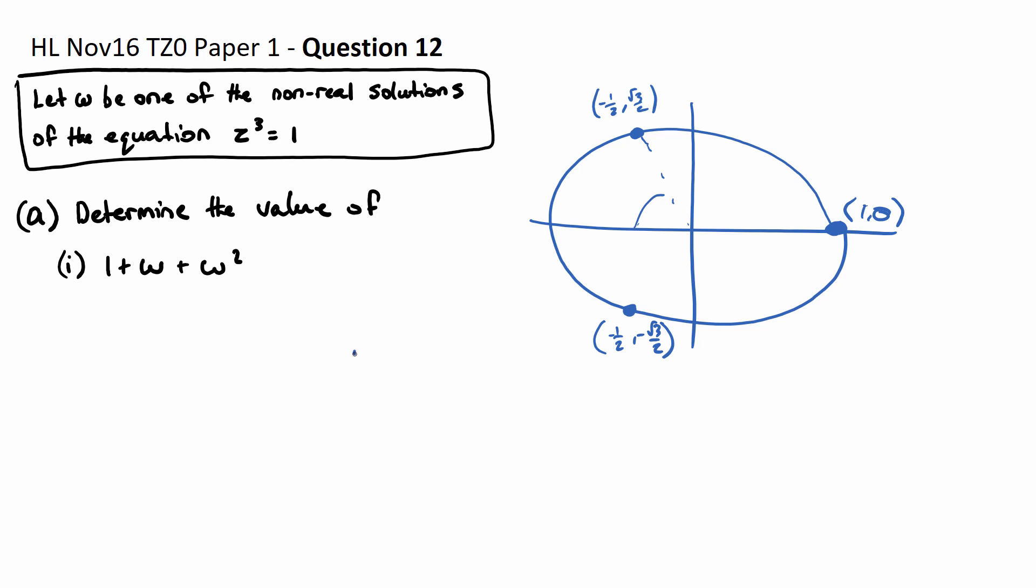Well w can equal 1 because 1 minus 1 will equal 0, w can equal 1 and that's this one here.